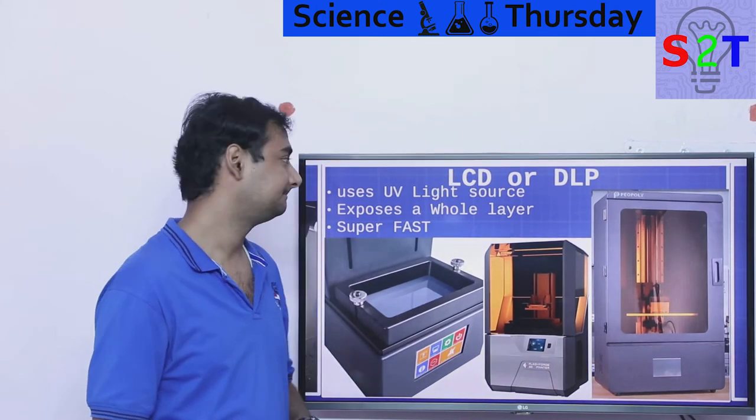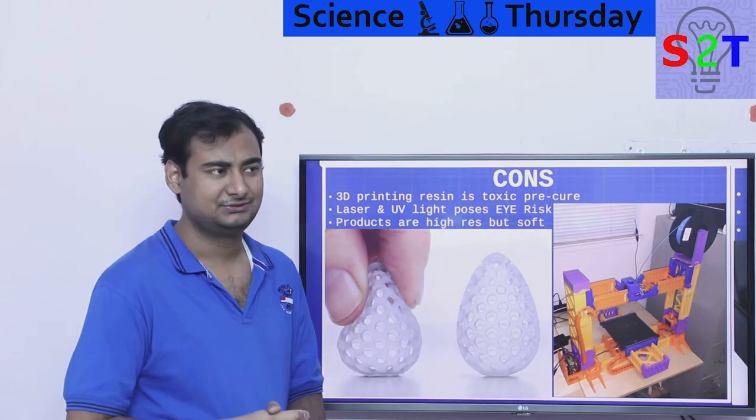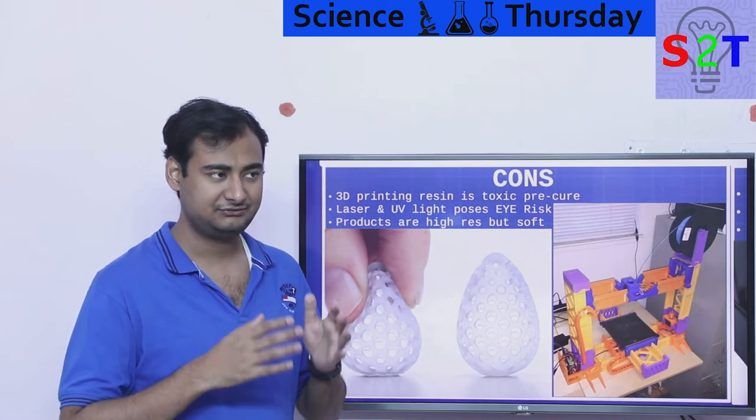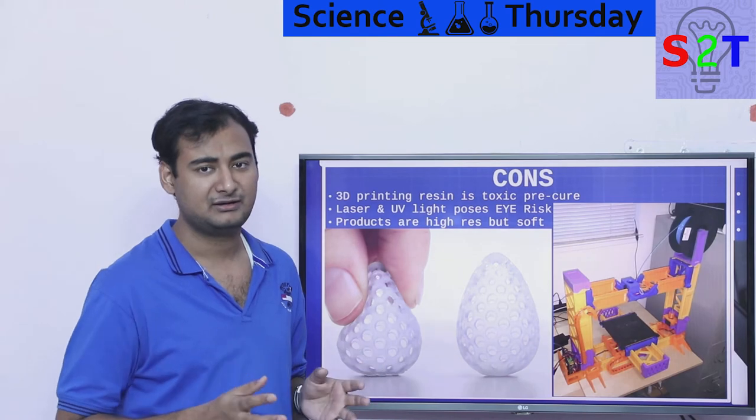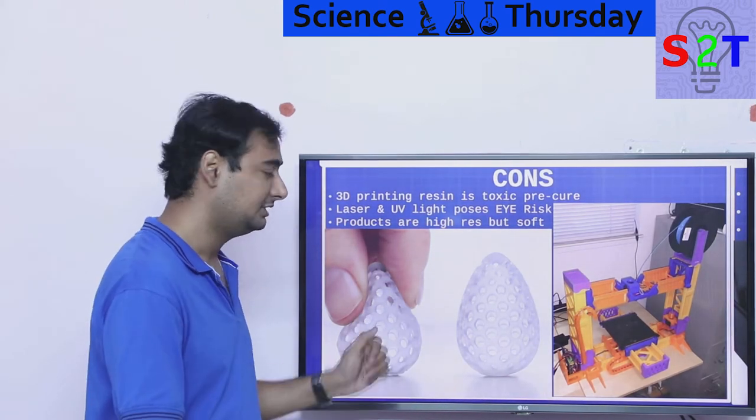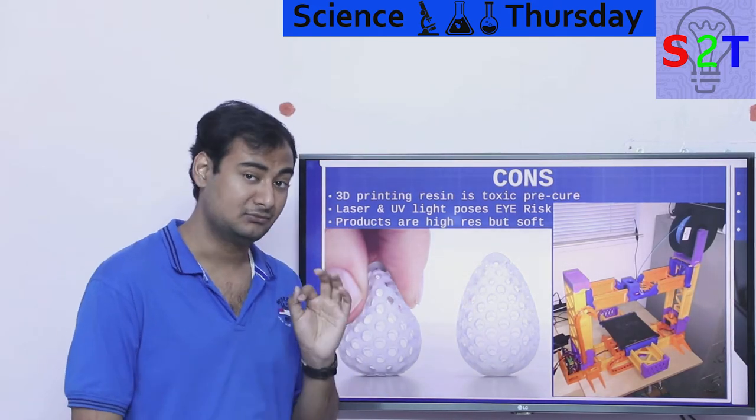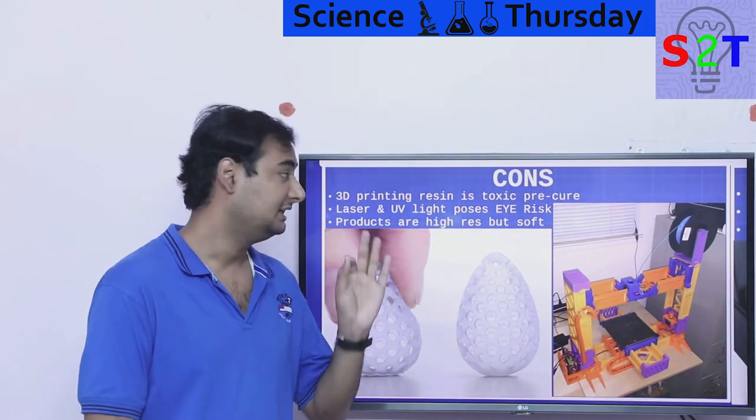So why don't you see this in like thousands? If you search YouTube for normal 3D printers you will find filament printers like ten times before you find even one liquid resin system. Why?